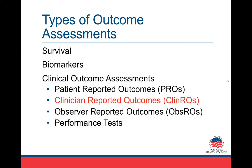The second category of outcome assessments are biomarkers — laboratory tests or radiological tests like a CAT scan or MRI. These are measured without any judgment; the machine does that in a standardized way. But clinical outcome assessments all require some form of judgment in making the measurement. You've already heard about patient-reported outcomes, and today we're going to focus on clinician-reported outcomes. There are also two others called observer-reported outcomes and performance tests.